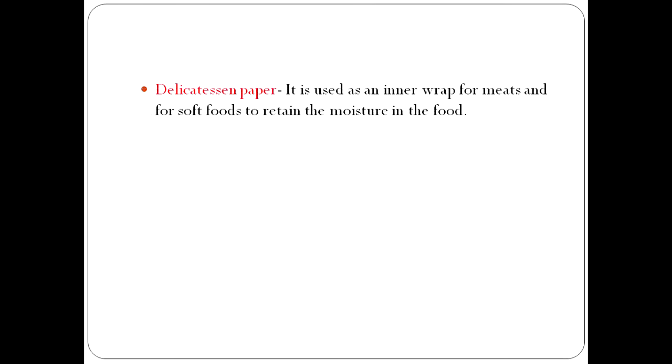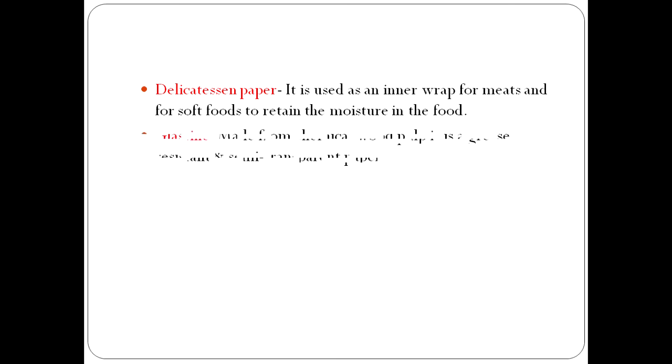Delicatessen paper is a paper used as an inner wrap for meats and soft foods to retain moisture in the food and to prevent the outer wrap from becoming wet. This kind of paper absorbs moisture and does not allow it to come out, so even if the product inside is very moist, the outer packaging level remains dry.